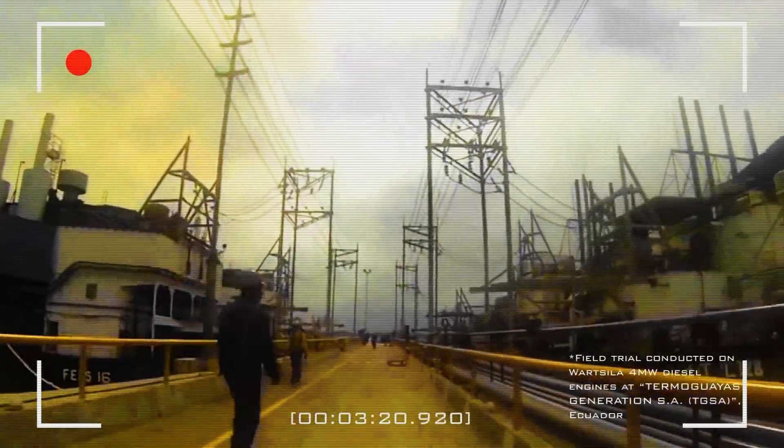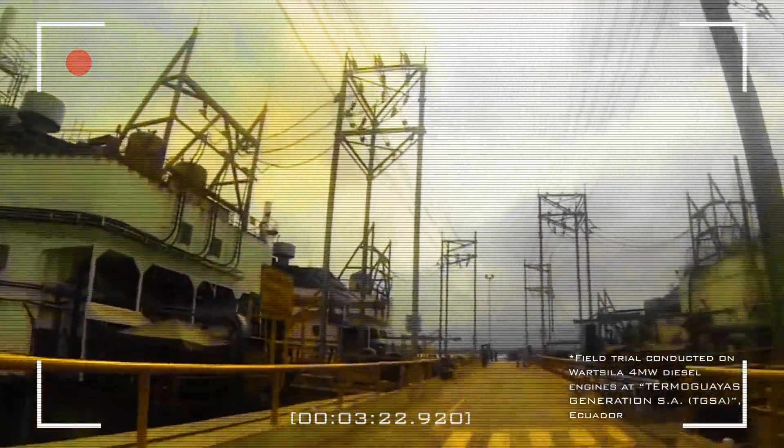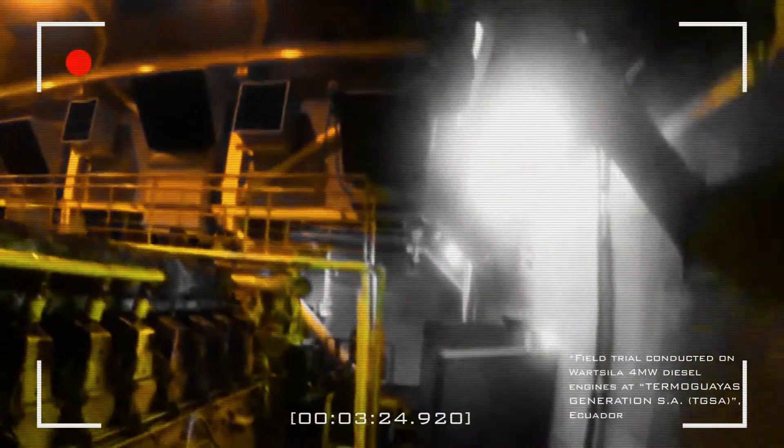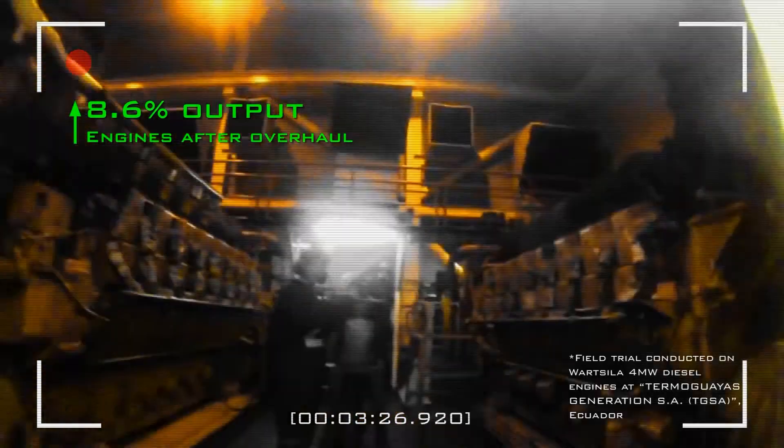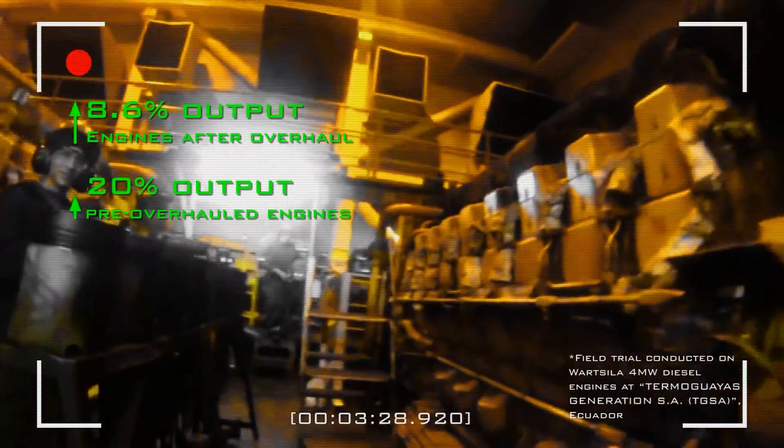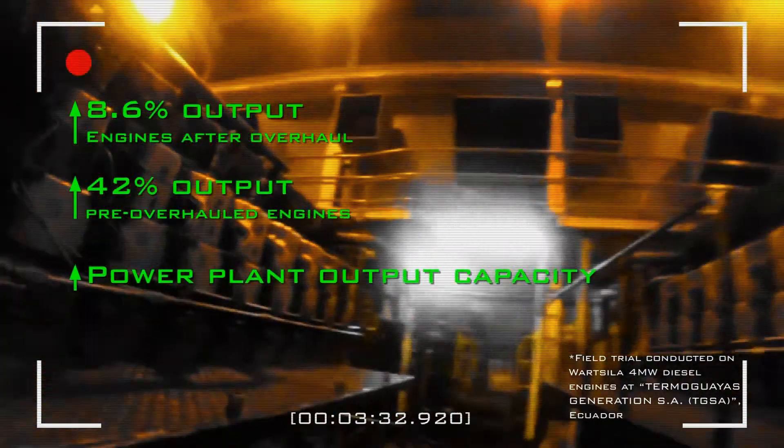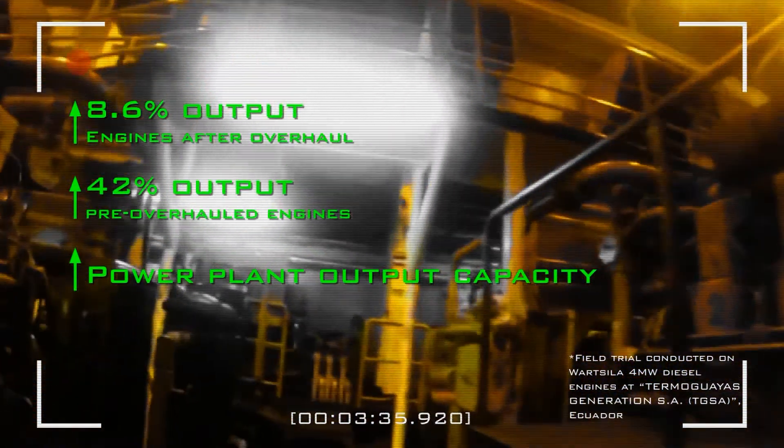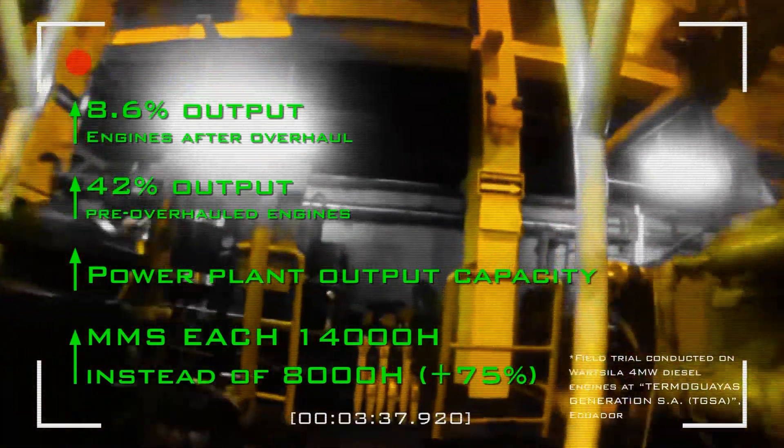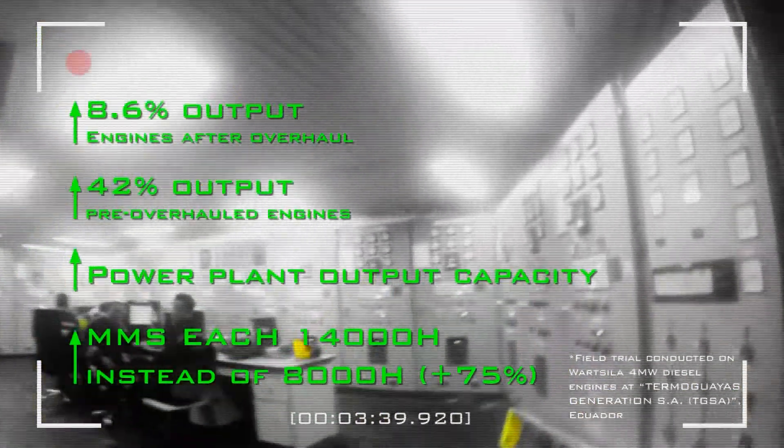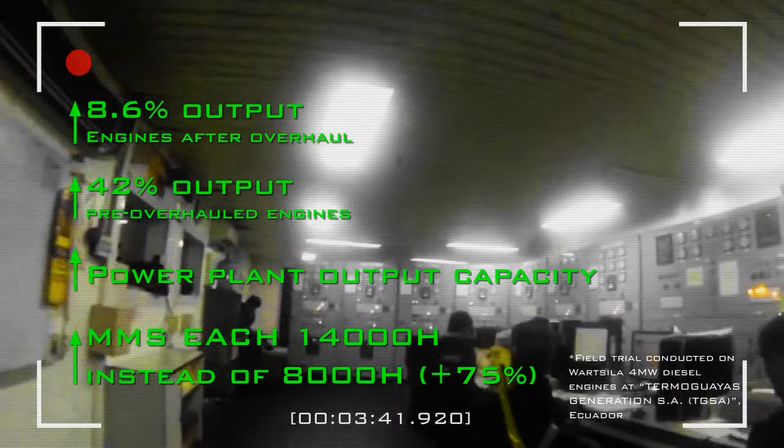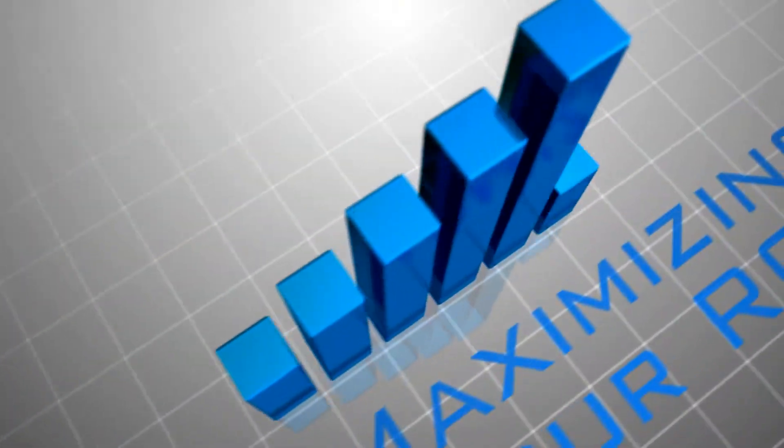An eight-month-long field trial demonstrates these powerful effects in action. 8.6% power output increase for overhauled engines, and a staggering 42% for pre-overhauled engines. With an impressive overall boost in the power plant's output capacity, major engine maintenance cycles were prolonged by up to 75%, all resulting in a potential of tens of millions of dollars in added profit.